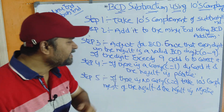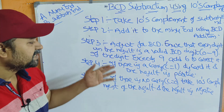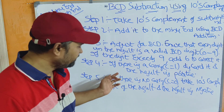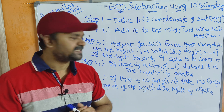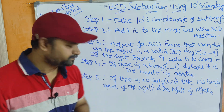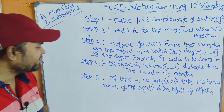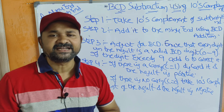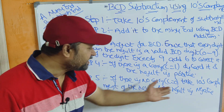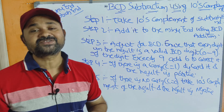Step 4: If carry C equals 1, discard the carry — the result is a positive number. After performing the addition, if the carry value is 1, the result is positive and we discard that carry. Step 5: If there is no carry, that is C equals 0, take the 10's complement of the result — the result is a negative number.